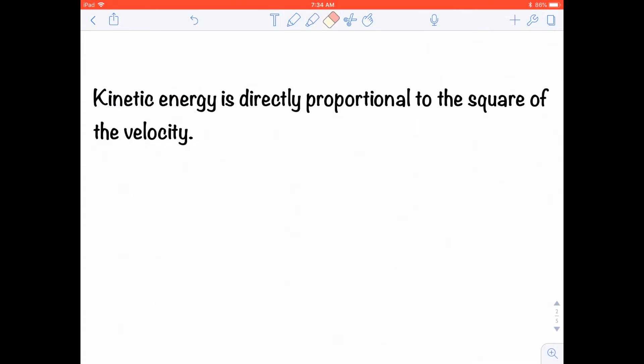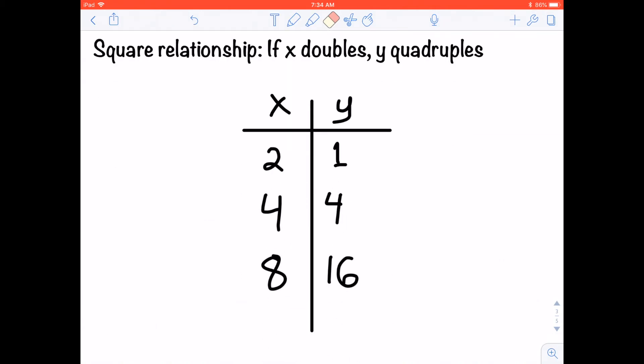Even I make mistakes sometimes. Kinetic energy is directly proportional to the square of the velocity. Now, what does it mean to be directly proportional to a square? Well, a square relationship is one where if x doubles, then y quadruples.